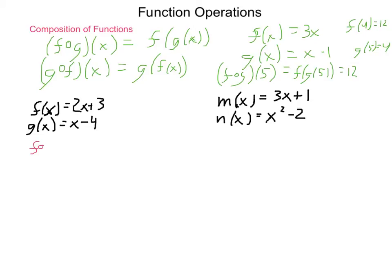f composed with g of x will be, we take our f equation, 2x plus 3, and in there we're going to substitute in g, which is x minus 4. Simplifying this through distribution, we get 2x minus 8 plus 3, which is 2x minus 5.